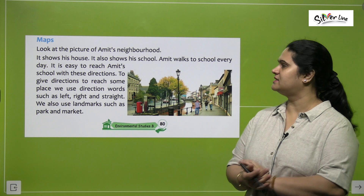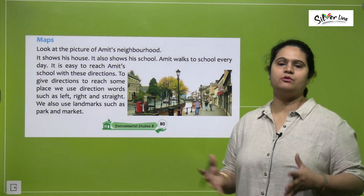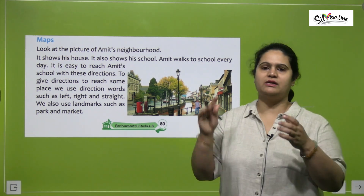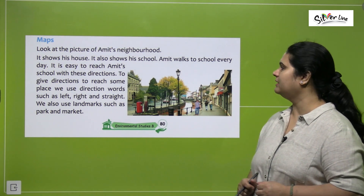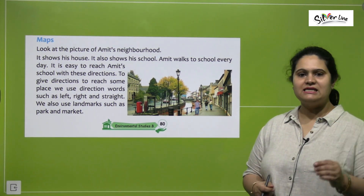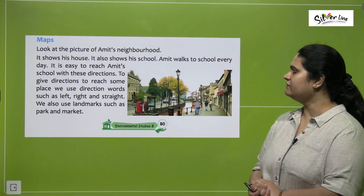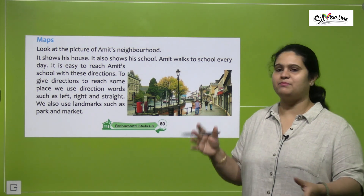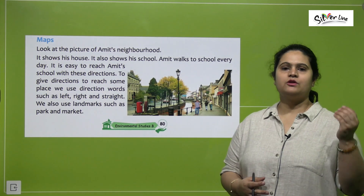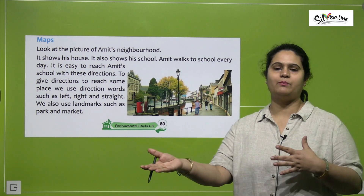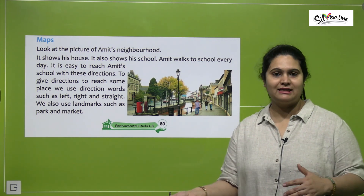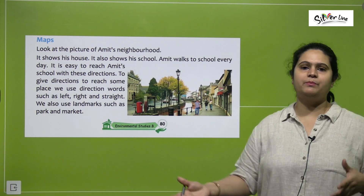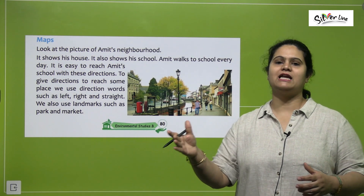Now let's talk about maps. Look at the picture of Amit's neighborhood. Yeh Amit ki neighborhood mein jo places hain, houses hain — unsab ki picture hai. It shows his house and also his school. So Amit walks to school everyday. It is easy to reach Amit's school with these directions. To give directions to reach some place, we use direction words such as left, right, and straight. We also use landmarks such as park and market, so that a person can easily reach their required place.